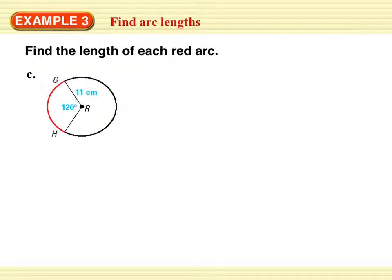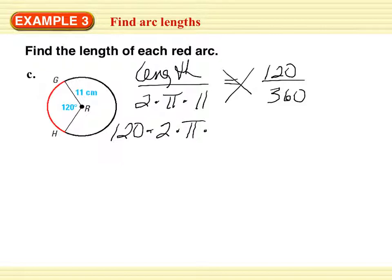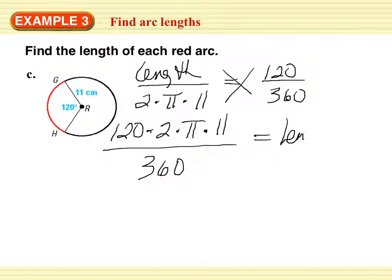Another example: length over 2 pi times 11 equals 120 over 360. So we get 120 times 2 times pi times 11, then divide by 360 to get the arc length of 23.0 centimeters.